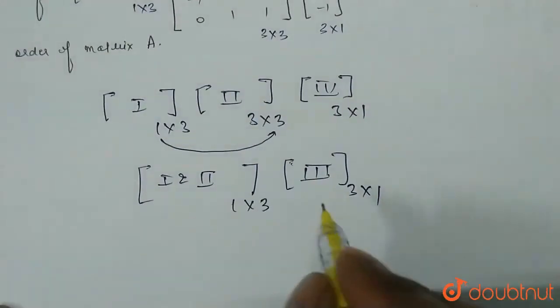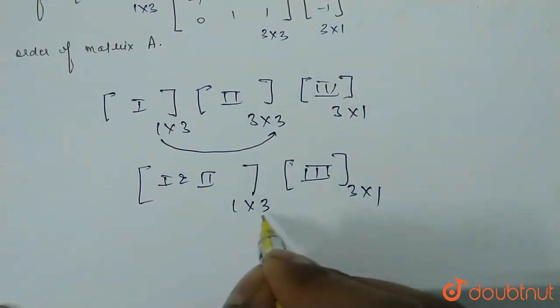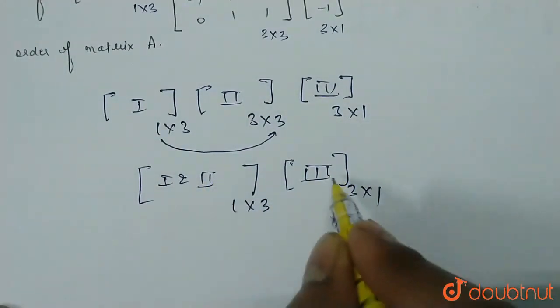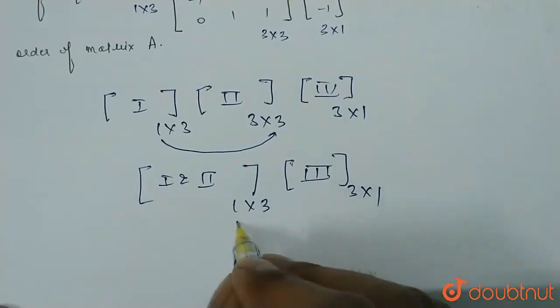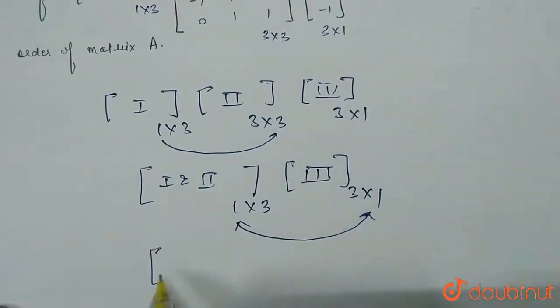Now, here, the number of columns in this matrix is 3. And the number of rows in this matrix is 3. So, matrix multiplication is possible. And the resultant matrix will have the order 1 cross 1.